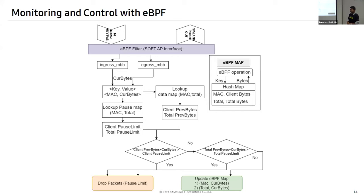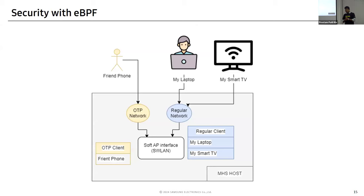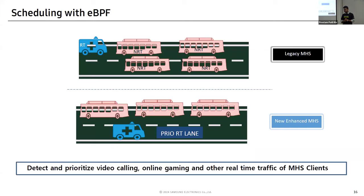For the pause setting, we interact with TCP headers and UDP addresses. For the one-time password, we maintain two separate networks: a regular network for normal users, and a one-time password network. eBPF ensures the OTP network cannot access the regular network — so your guest won't interfere with your screen sharing or smart TV. This network isolation is also enabled with eBPF.